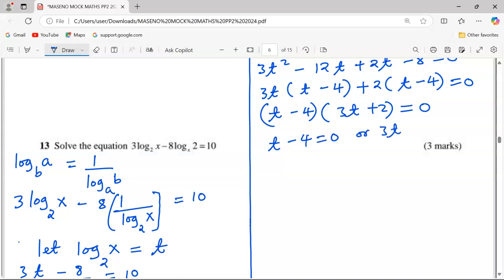Or 3t + 2 = 0. So the value of t will be equal to 4, or the value of t is equivalent to -2/3. So those are the possible values of t.